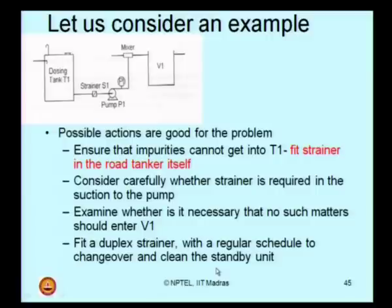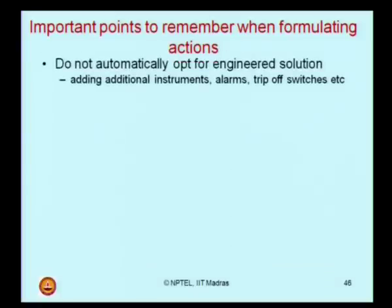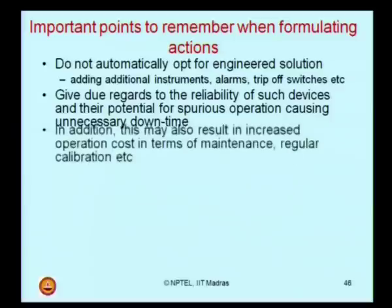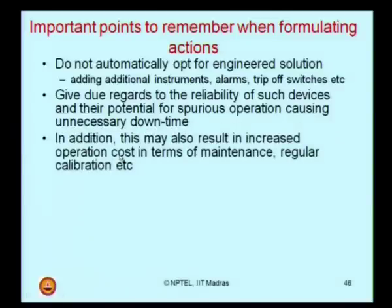Insist in the action column that these strainers should be periodically and regularly cleaned for maintenance, and also have a standby unit of this line — because if the strainer is choked, you should be able to pass the liquid to V1 by an alternate line. If there is no T1 flow into V1, the whole process is affected. The HAZOP report has five columns basically: deviations from design intent, the causes, the consequences, the existing safeguards, and the recommended actions. When writing the action column, do not automatically opt for an engineered solution. Adding additional instruments, alarm systems, or trip-off switches are not always the most effective method of recommending actions.